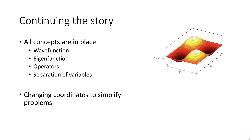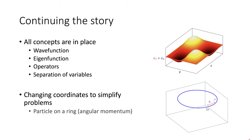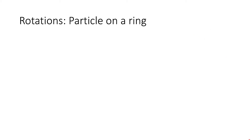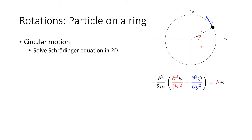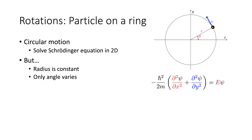In this session, we're going to look at how changing coordinates can simplify a problem. In particular, we're going to be talking about the particle on a ring — the rotations of angular momentum — and we'll also move on later to talk about the quantum harmonic oscillator. When we think of the particle on a ring, we're thinking about circular motion: what happens as a particle rotates around an origin. This requires us to consider the Schrödinger equation in two dimensions, since a ring is in the x-y plane. However, the x and y components on the ring are not independent of each other — they vary in accordance with the laws of circular motion.